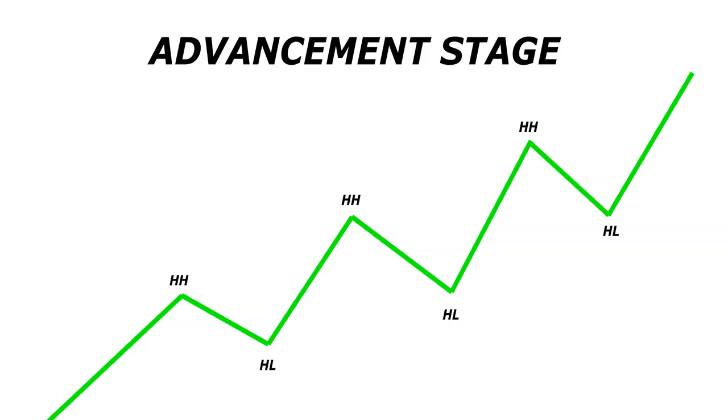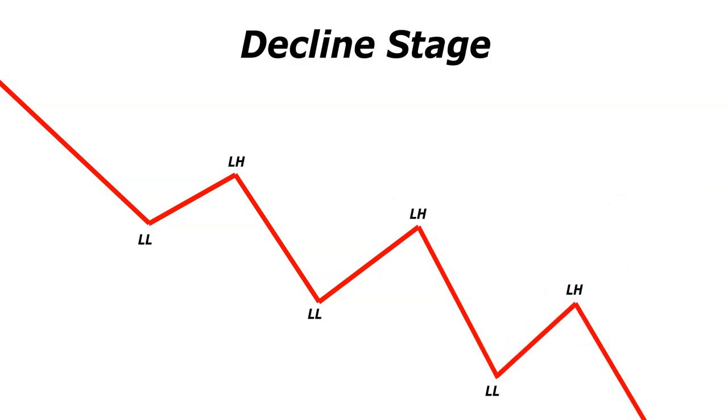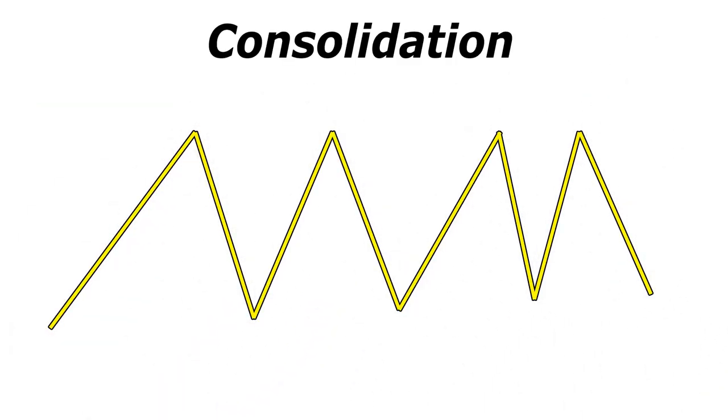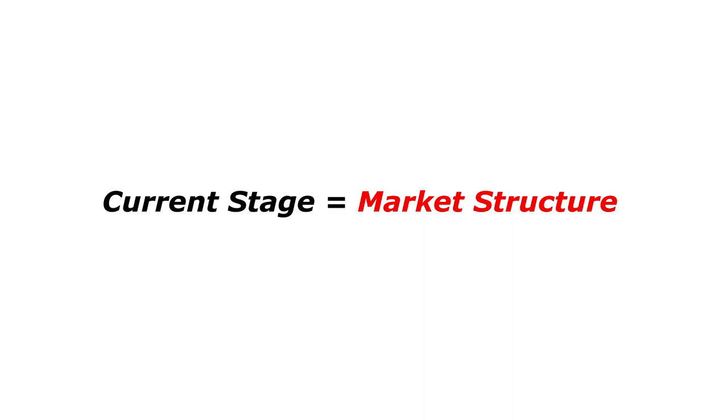A stock moves in three main directions: upward, downward, or sideways. A stock moving upwards creates a series of higher highs and higher lows and can be referred to as the advancement stage. A stock moving downwards creates a series of lower highs and lower lows and can be referred to as the decline stage. Sideways movement, as you may have expected, we will call consolidation. The stage that a stock or future is in would be its market structure.